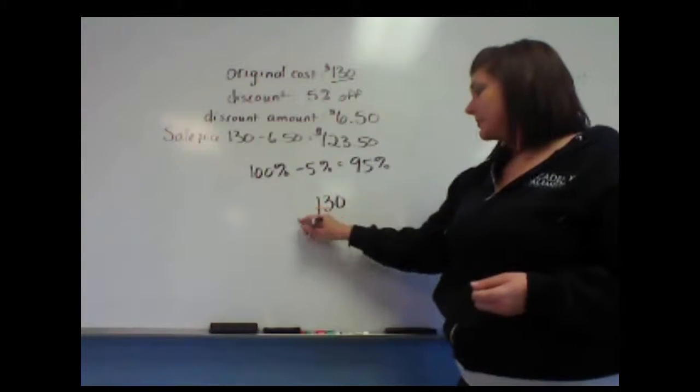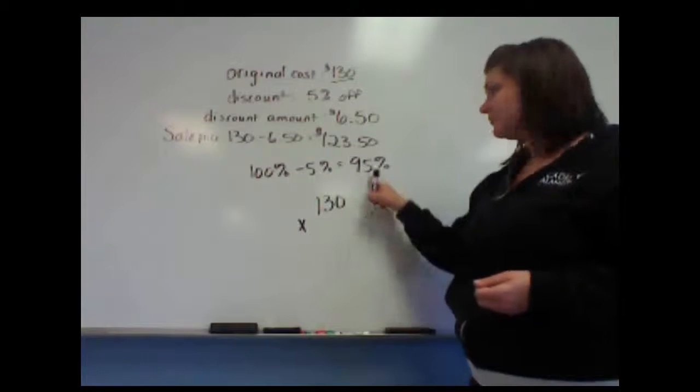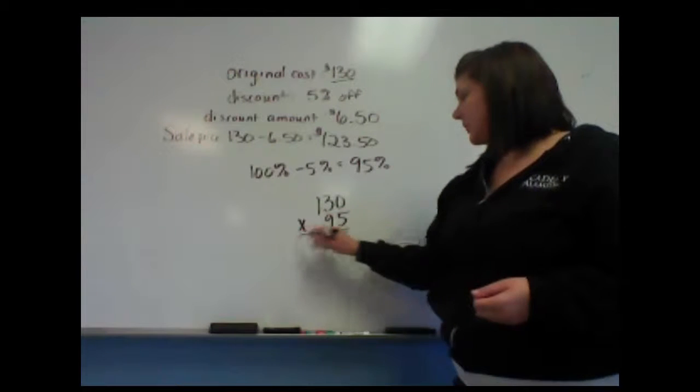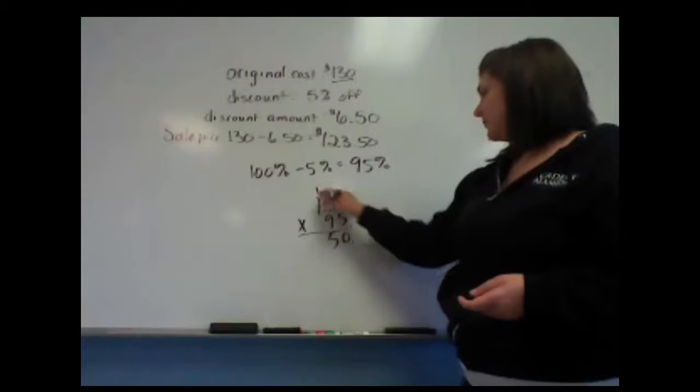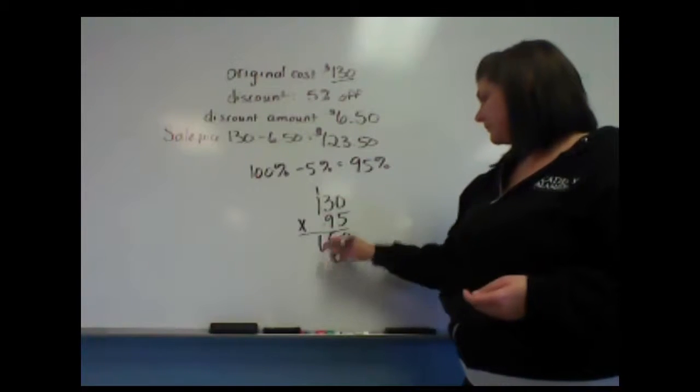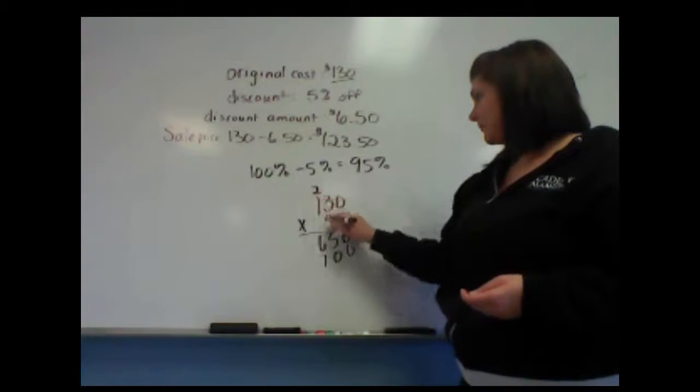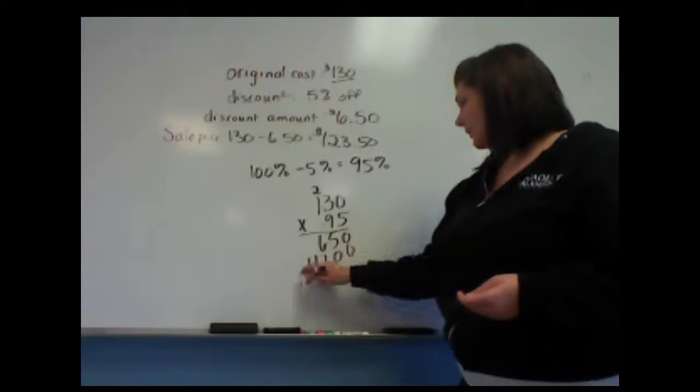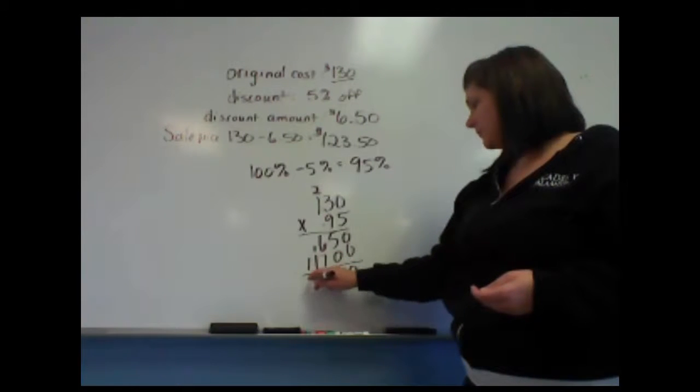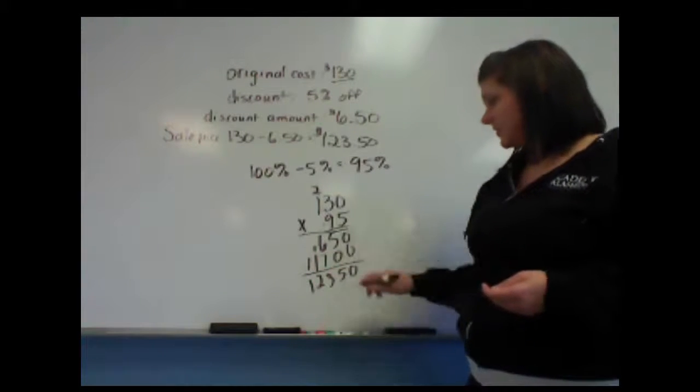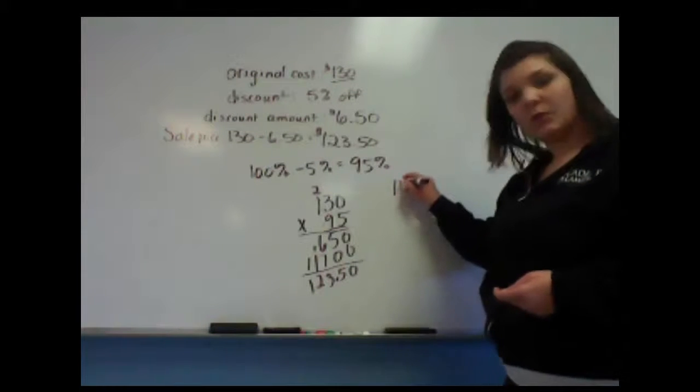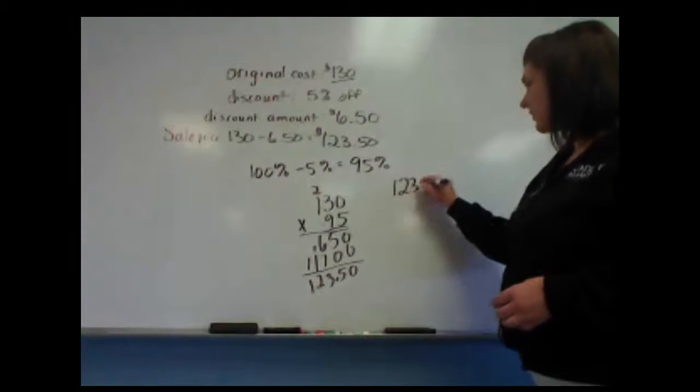So 130 times, I'm going to use my decimal version, so my multiplier will be .95. We're going to multiply it out, we get 0, add that up, and count our decimals, we move over twice, and our answer again is $123.50.